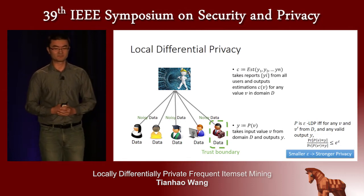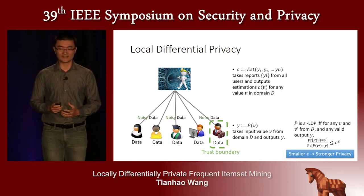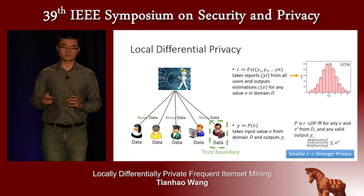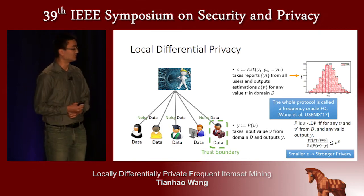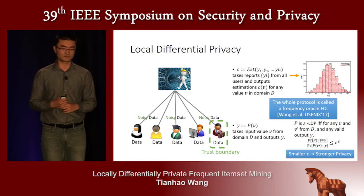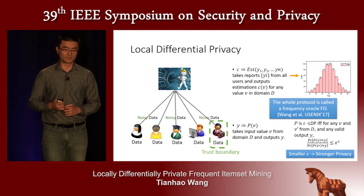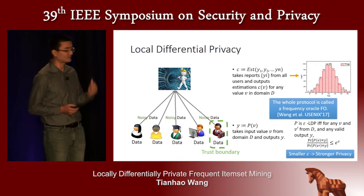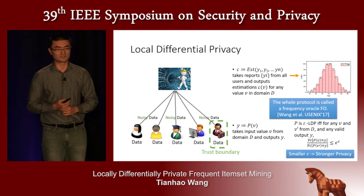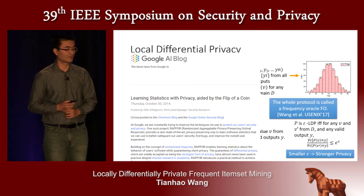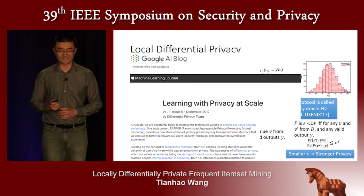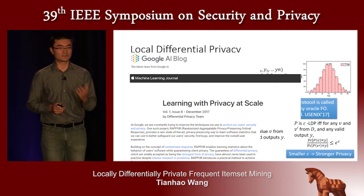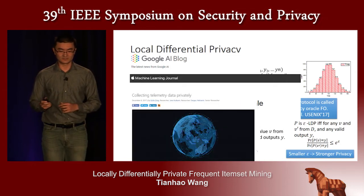On the server side, there is an estimation function that takes all the users' reports and outputs the estimated distribution of any value in the domain D. We call this protocol a frequency oracle, and there are many frequency oracles proposed in the past — see our USENIX '17 paper for a systematic survey. In the industry, we have seen many deployments, for example Google's deployment with Chrome, Apple using it to collect information from iPhone and Mac OS, and Microsoft also deploying it recently.